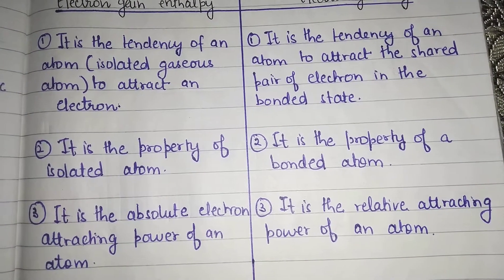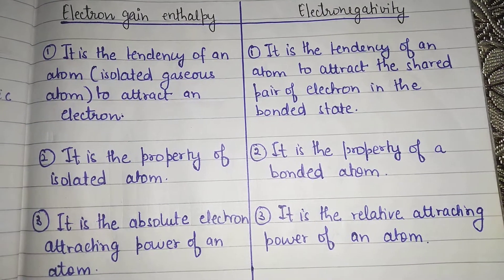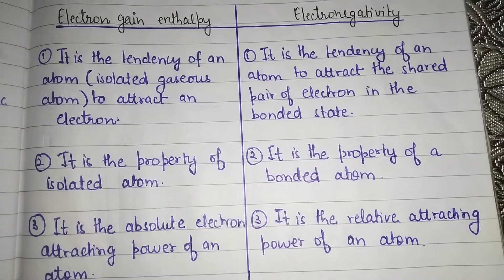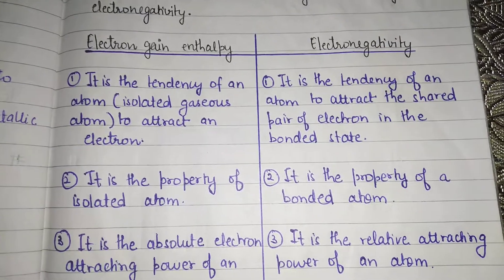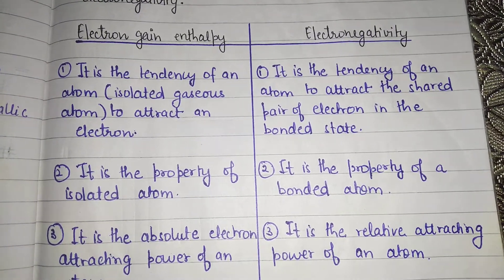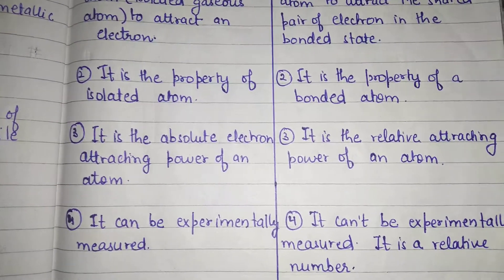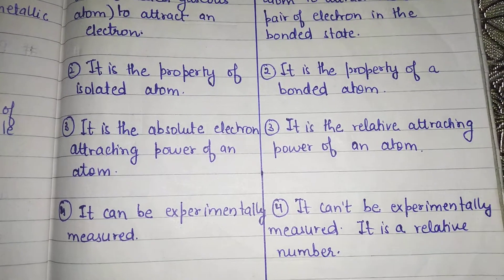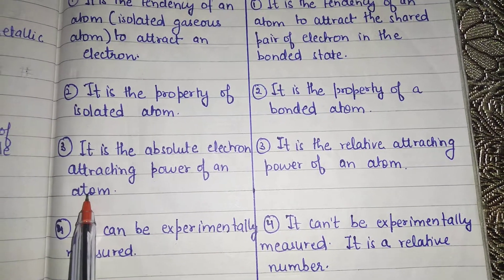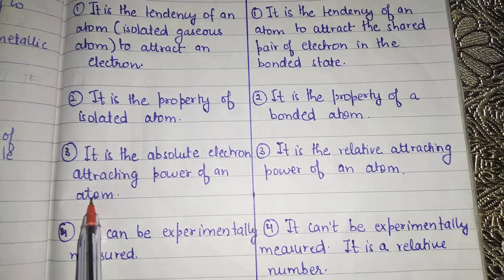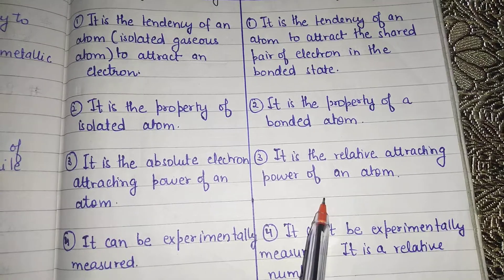The third difference is that electron gain enthalpy represents the absolute electron-attracting power of an atom — one atom's absolute power to attract an electron. However, in the case of electronegativity, it is the relative attracting power of the atom, because it is present in the bonded state. The words absolute and relative are very important here, because an isolated gaseous atom has its own power of attraction, whereas two bonded atoms can be of different elements.